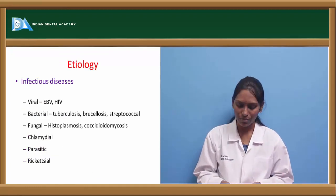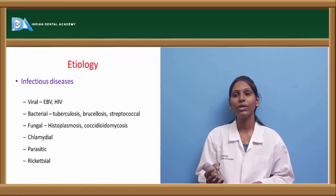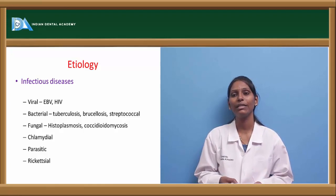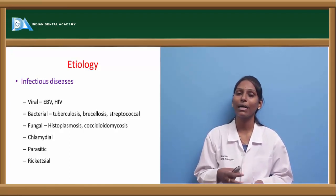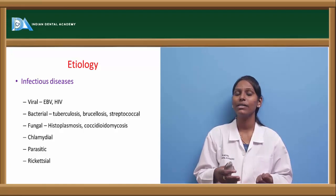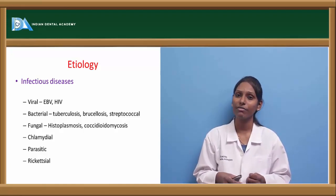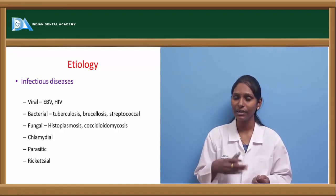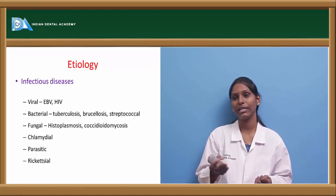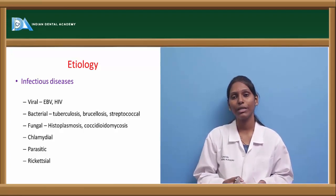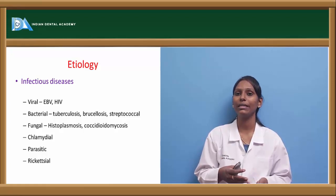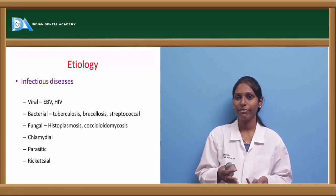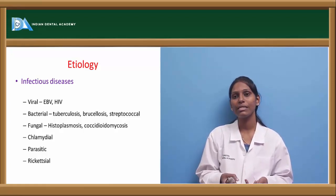Coming to the etiology, there are multiple etiologies in case of lymphadenopathy. One is infectious diseases, which can be viral, bacterial, fungal, or various types. Viral infections that cause generalized lymphadenopathy especially include Epstein-Barr virus and human immunodeficiency virus (HIV/AIDS). Localized lymphadenopathy due to viral infections can also be seen in mumps and other viruses.